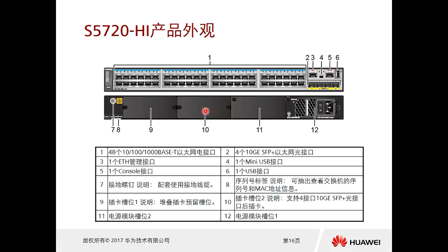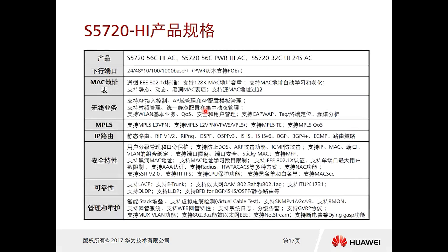Additionally, it supports business and network convergence with on-the-go business capability. It also supports iQoS (IP quality of service) to determine network service quality, and supports an advanced feature called SVF (Super Virtual Fabric), which enables vertical virtualization. The S5720 is a rather special switch.